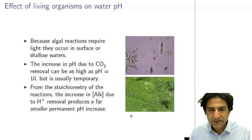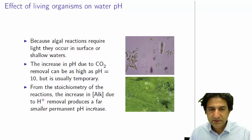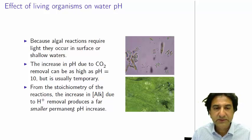Now if you consider the stoichiometry of those reactions, there is an increase in alkalinity due to H-plus removal. But that's a far smaller effect, and it's not temporary — it's permanent. So this is a local temporary effect where the pH goes up but then it disappears. But then afterwards, from stoichiometry, there's a smaller permanent pH increase.